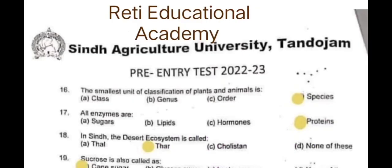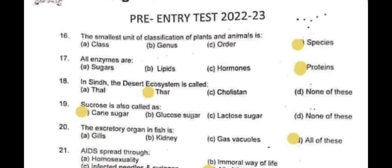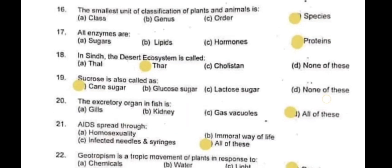Subscribe to Rethi Educational Academy YouTube channel and follow us on TikTok and Facebook. Question 16: The smallest unit of classification of plants and animals is D – Species. Question 17: All enzymes are D – Proteins. Question 18: In Sindh, the desert ecosystem is called B – Thar. Question 19: Sucrose is also called cane sugar. Question 20: The excretory organ in fish is all of these – gills, kidney, and contractile vacuoles. Question 21: AIDS spreads through all of these – homosexuality, immoral way of life, and infected needles and syringes.